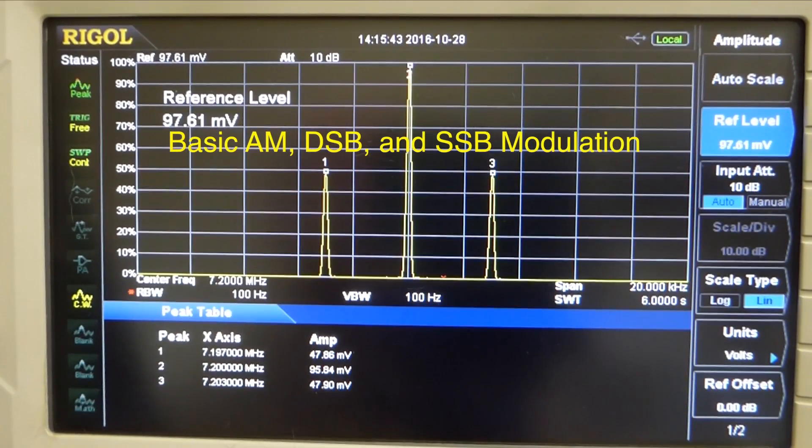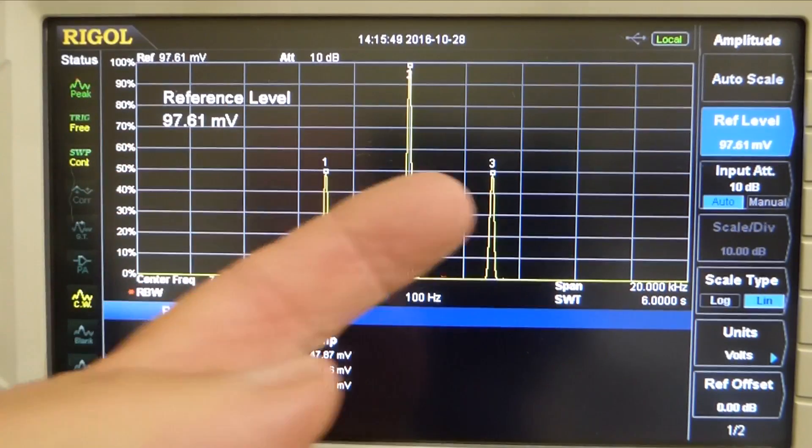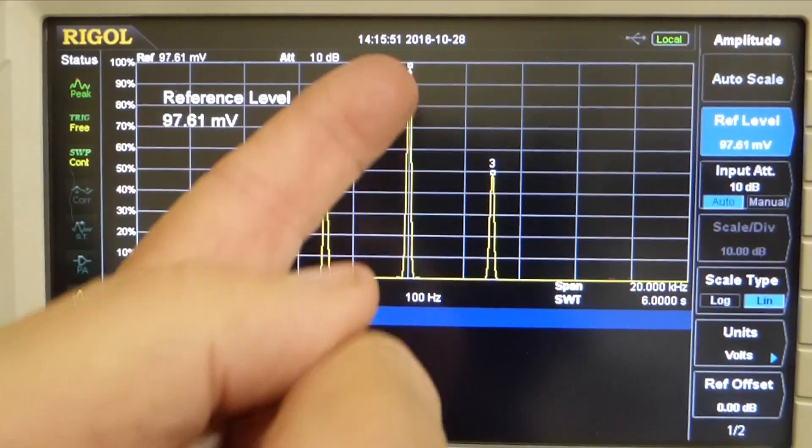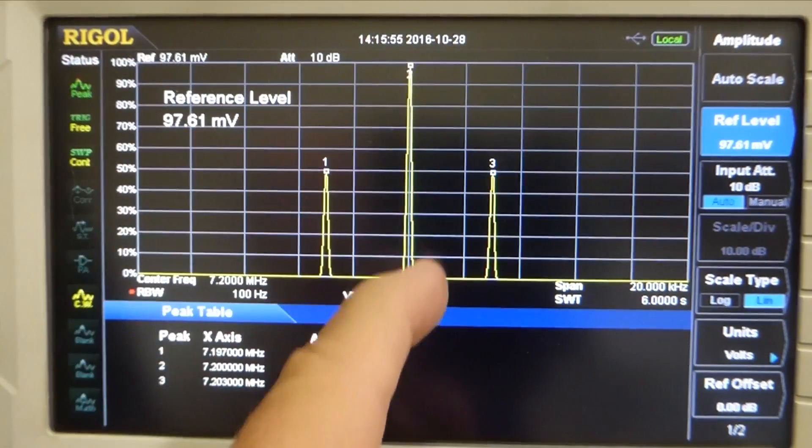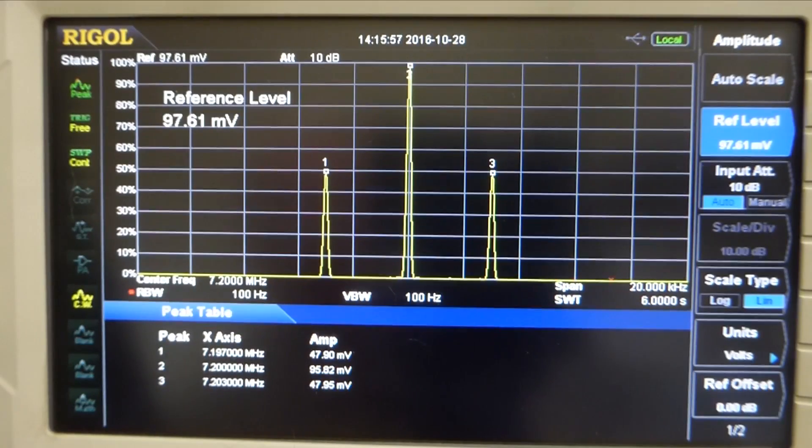In a previous video I showed you AM modulation, about 50% in each one of these sidebands and 100% here. So there's a lot of energy here that is being wasted in this form of modulation.